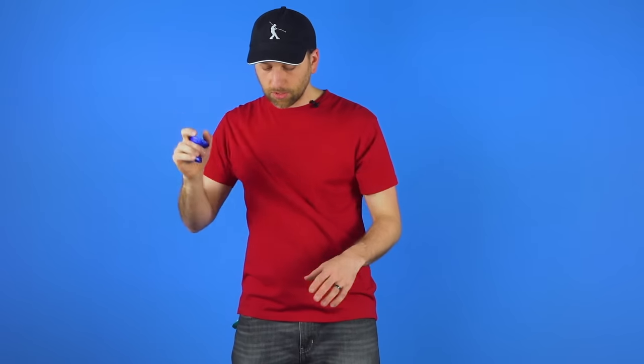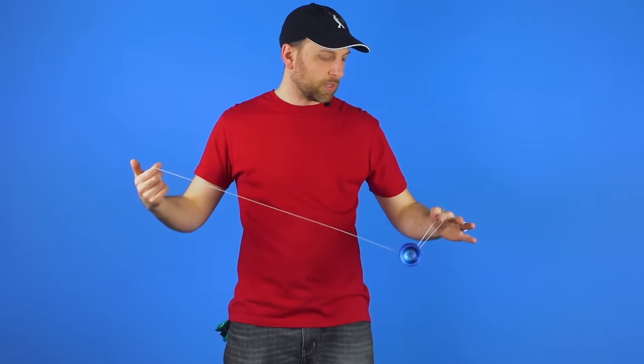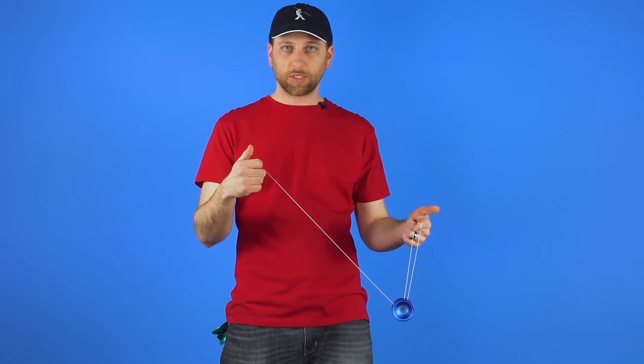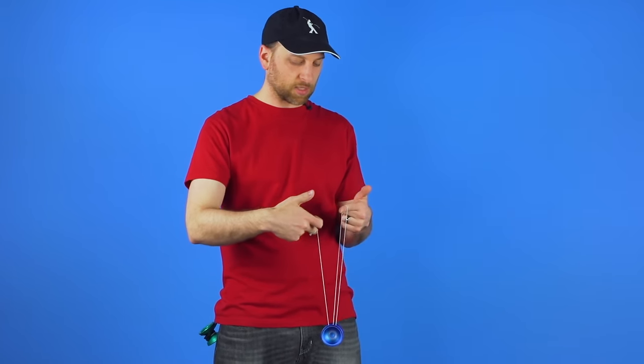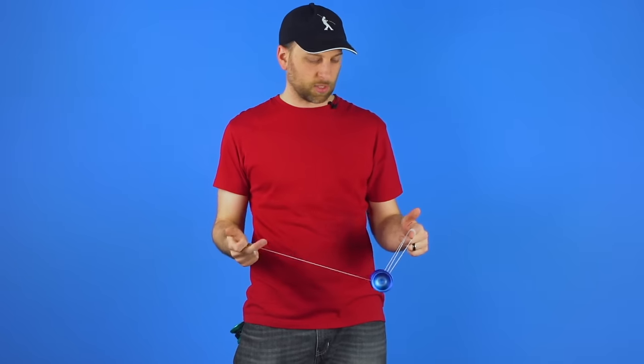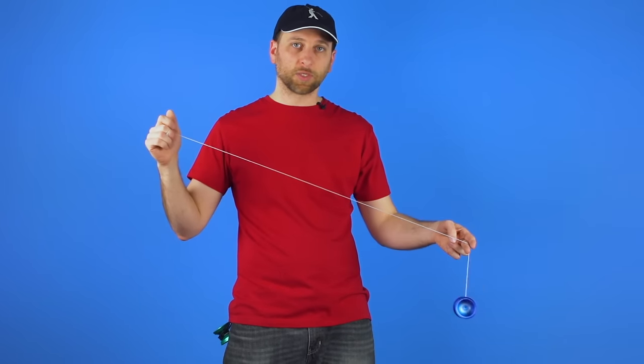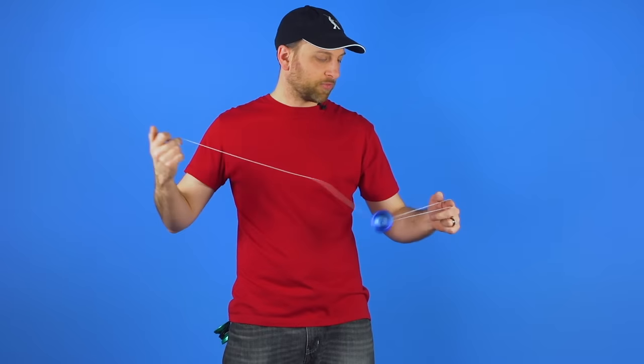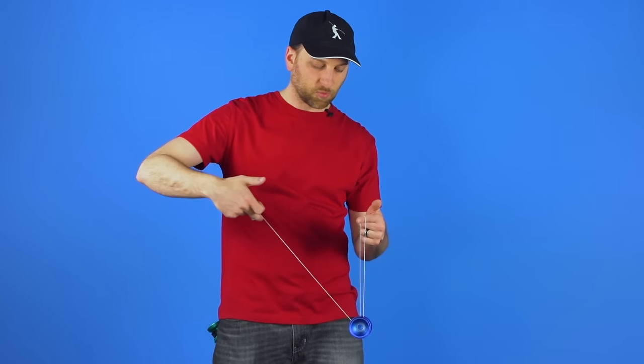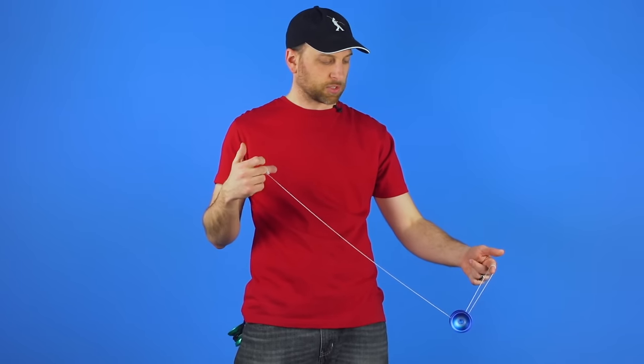When you first get into the transition from Skin the Gerbil into Horizontal Skin the Gerbil, there's one tweak you're going to want to make to the trick, right at the beginning. If you watch our video where we teach Skin the Gerbil, the first thing we talk about is how you should do a flip into the double trapeze. If you want the trick to be as quick as possible, that flip will always slow you down because you have to wait to get your hand over there to push the string around.